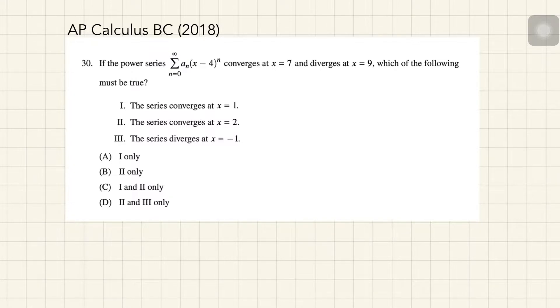If the power series converges at x equals 7 and diverges at x equals 9, which of the following must be true? We're given three statements. Statement 1 says the series converges at x equals 1. Statement 2 says it converges at x equals 2. And statement 3 says the series diverges at x equals negative 1.